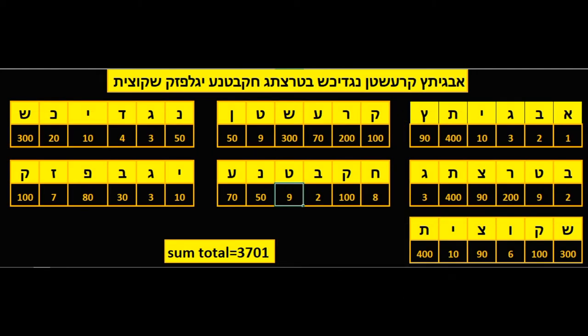42 letters broken into seven words. The name, the special divine name of God, has a sum total Hebrew gematria value of 3701.